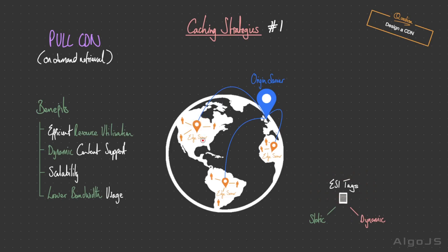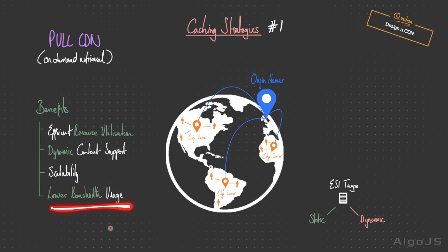When a user requests a page, the CDN edge server retrieves static content directly from cache and concurrently fetches dynamic fragments from the origin server, assembling them in parallel. Pull CDNs are also scalable, as content is fetched on user request, and they have lower bandwidth usage since content is transferred from the origin server only when needed. For unpopular content, it will potentially never be pulled, saving bandwidth and storage within the proxy servers.